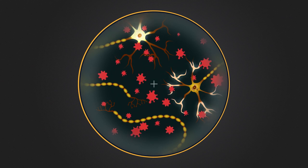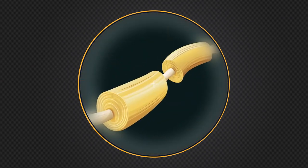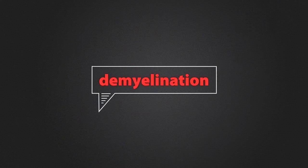As psychosine builds up in the nerve tissue, it begins to destroy the myelin sheath, which covers and insulates the nerves. This process is called demyelination.